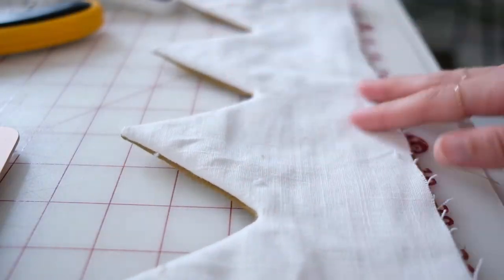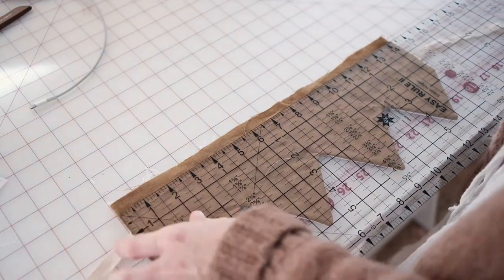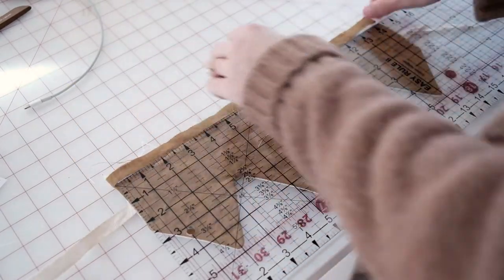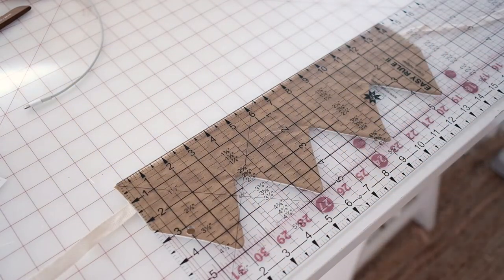I recommend measuring the crown at this stage on your child to see if it's at the height that you like. If it's a little too tall, you can cut a little bit off the bottom.